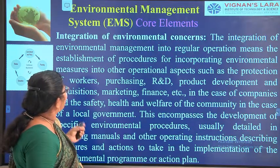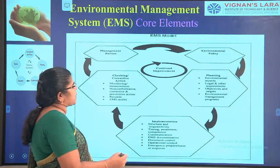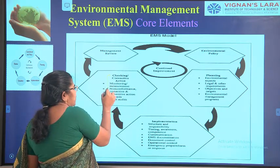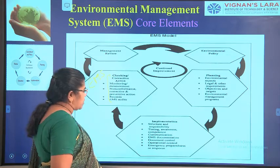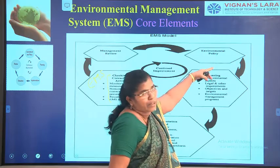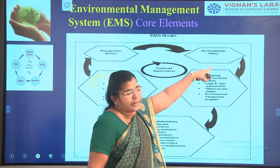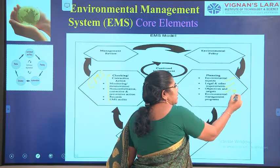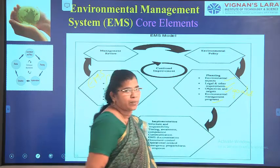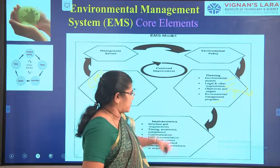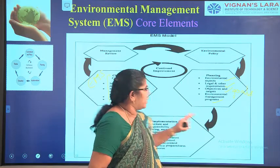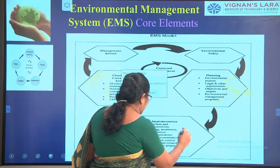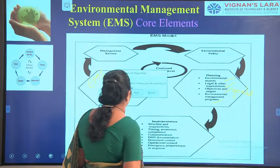In the EMS model, there is a management review, checking and correction actions, monitoring and measurements — all these come under EMS records. Management takes an environmental policy and checks whether the goals are met. For this, they look at environmental aspects, legal requirements, objectives, and EMS programs established to monitor everything. After planning, implementation begins: structure and responsibility, awareness, communication, EMS documentation, and control are all addressed.